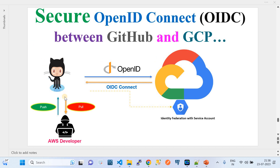The flow of this demo is: a developer works on source code present on GitHub — it could be infrastructure as code or source code deployment on the GCP infrastructure. The authentication mechanism is OpenID Connect, which is a secure method to establish a connection with GCP. Note that OpenID Connect also supports multiple other cloud providers like Azure and AWS.